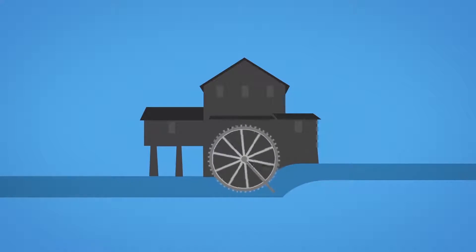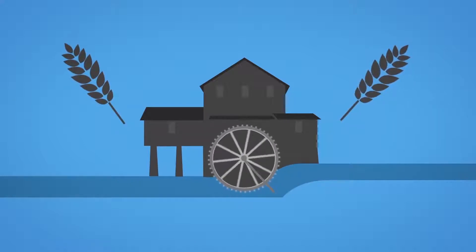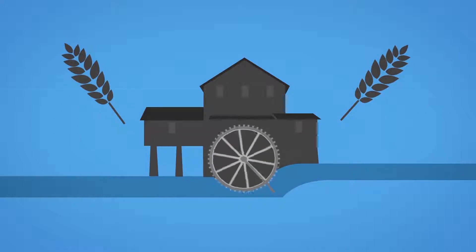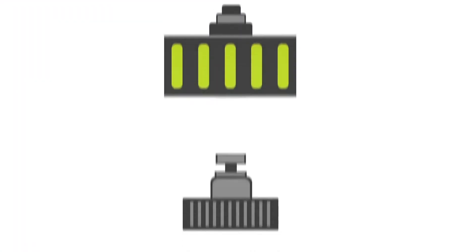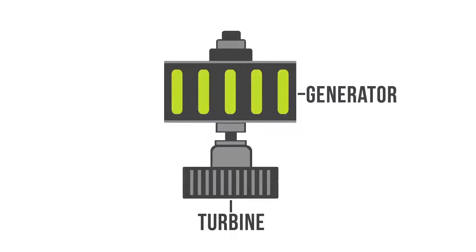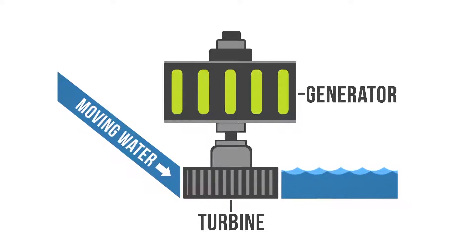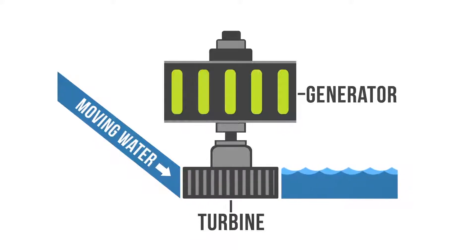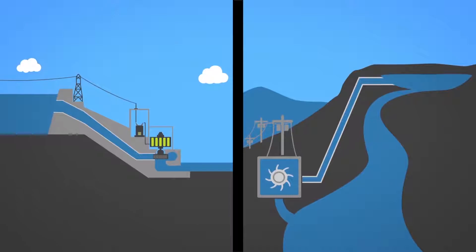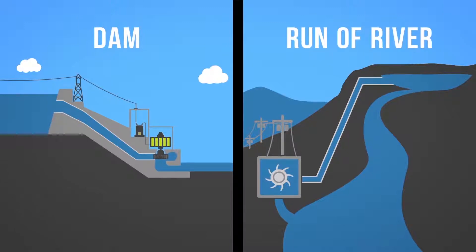One of the first uses of hydro energy was for mechanical milling, such as grinding grains. Today, modern hydro plants produce electricity using turbines and generators. The mechanical energy created by moving water spins rotors on a turbine, which is connected to an electromagnetic generator that produces electricity when the turbine spins.